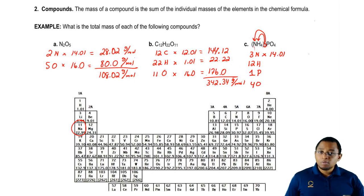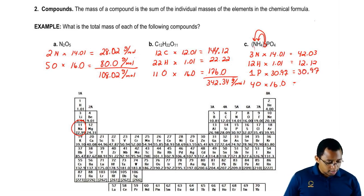Then we use the atomic masses of each individual element. That gives us 42.03, that gives us 12.12, 30.97 and this last one is 64. We add up all those totals to find the total mass of our complete structure. This would be 149.12 grams per mole.